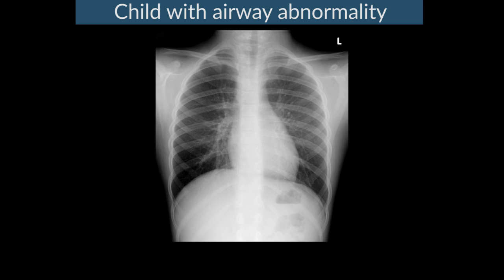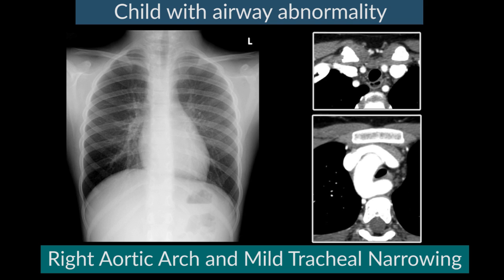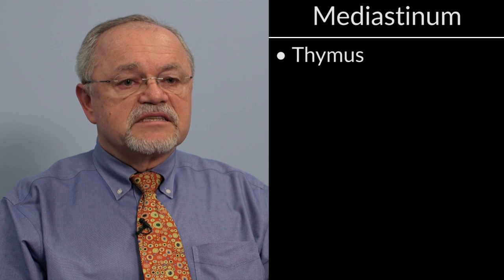Here's another child presenting with an airway abnormality. The trachea, rather than being slightly to the right of midline, is displaced to the left. Normally the aorta on the left side minimally displaces the trachea to the right. In this child, we see a right aortic arch and mild narrowing of the trachea. This can be associated with a symptomatic right aortic arch and a vascular ring. A CT scan shows normal caliber trachea in the upper image and moderate narrowing in the lower image caused by a right aortic arch and aberrant left subclavian artery compressing the trachea posteriorly.